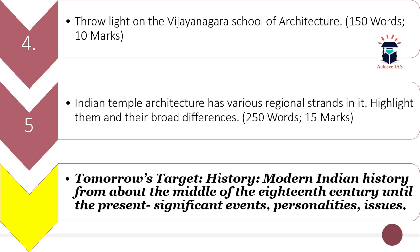The word limit for question four is 150 and the maximum marks are 10. It is a specific question where you simply have to throw light on the topic. The fifth question is: Indian temple architecture has various regional strengths — highlight them and their broad differences. You have to discuss Indian temple architecture, its regional strengths, and their broad differences. The word limit is 250 and the maximum marks are 15.